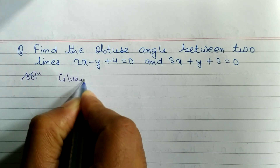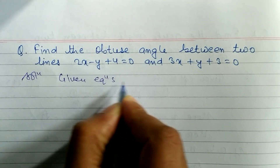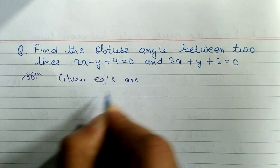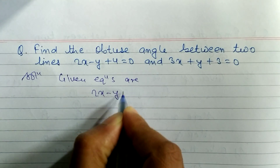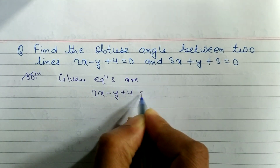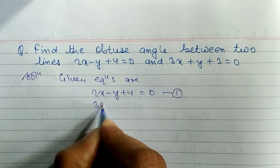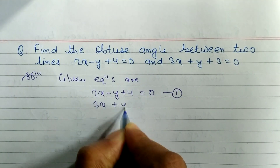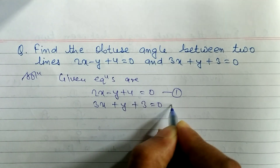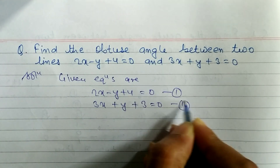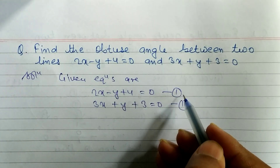Given equations are: 2x minus y plus 4 is equal to 0 — equation 1, and 3x plus y plus 3 is equal to 0 — equation 2. First of all, we have to find the slope of equation 1 and the slope of equation 2.